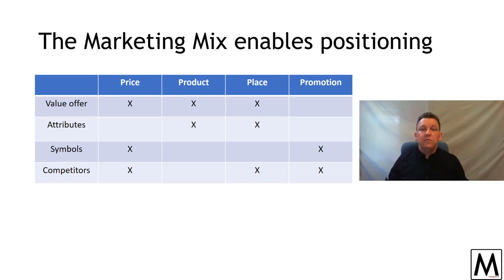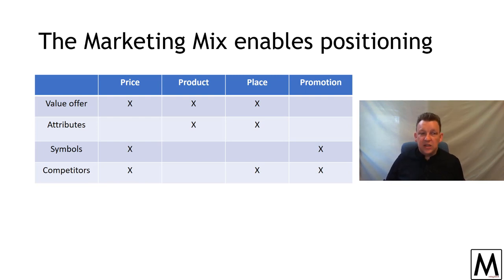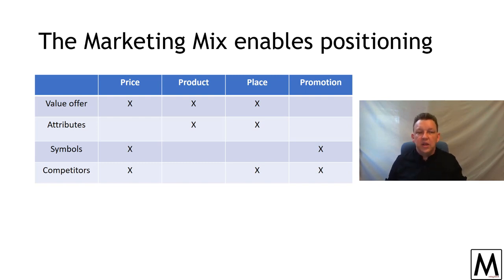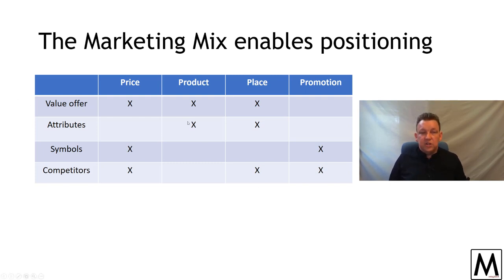Product positioning: does the product offer the same set of values — more, less, better, worse? Place: are you available in the same locations as your competitor products? Promotion for positioning positions around symbols and competition — the message you send, do you actually mention your competitors? There is a messaging strategy that allows you to put your value offer head-to-head with your opponents. You can also position based on attributes, features, volume, size, and location. Are you exclusive?